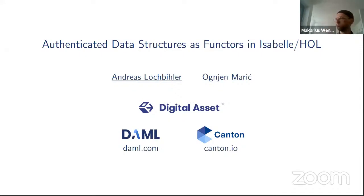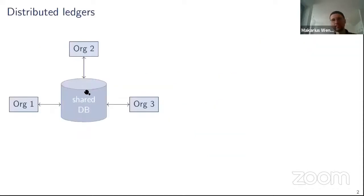Thanks for the intro. So, this is a joint work with Ogny, and we're both working at Digital Asset on a distributed ledger architecture using a smart contract language that we call DAML and a synchronization protocol Canton, and this is where the whole work originates from. So, what is a distributed ledger in that case? In our understanding, the main value is that they basically provide a concept of a shared database abstraction, and that shared database is shared between different organizations.